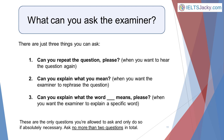The final issue is not understanding the question. If there's just one key word you're unsure of, you probably aren't going to be able to answer it properly. What most candidates don't know is that you're allowed to ask one or two questions during part three if you really need to. There are just three things you can ask: one, 'Can you repeat the question please?' when you want to hear it again; two, 'Can you explain what you mean?' when you want the examiner to rephrase the question; and three, 'Can you explain what the word means please?' when you want the examiner to explain a specific word. These are the only questions you're allowed to ask, and only do so if absolutely necessary — ask no more than two in total. Asking the examiner a couple of questions won't affect your score, but keep it to two and don't ask anything else.